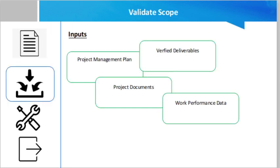The first input for this process is the Project Management Plan. The project management plan contains the scope management plan, which helps in specifying how formal acceptance of the completed project deliverables will be obtained. Project documents are also a very important input for this process.